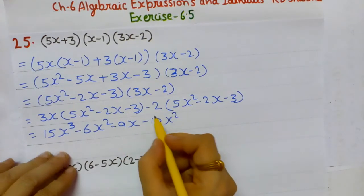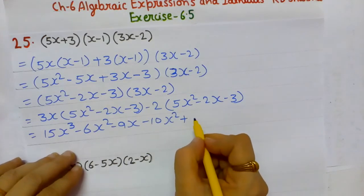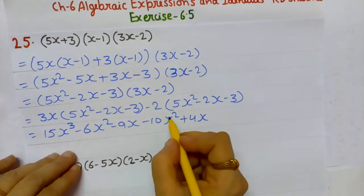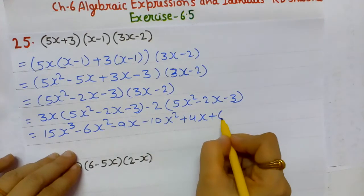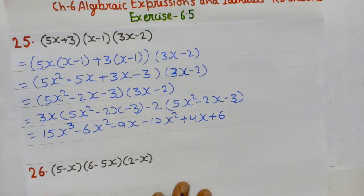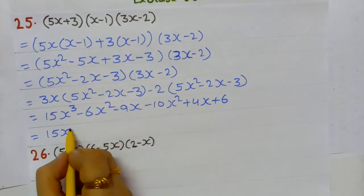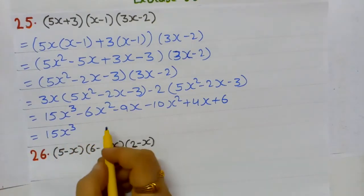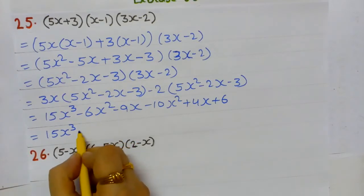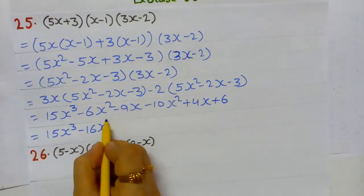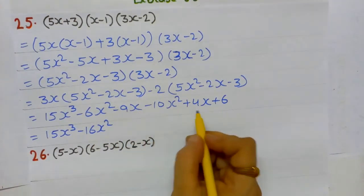3x × (-3) = -9x. Now multiplying -2 by (5x² - 2x - 3): -2 × 5 = -10x²; -2 × (-2x) = +4x (minus-minus becomes plus); -2 × (-3) = +6.